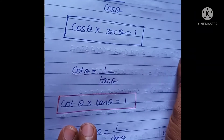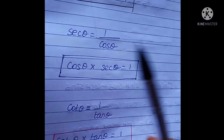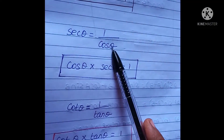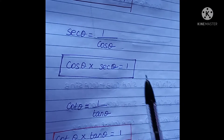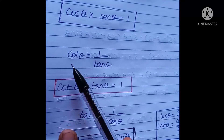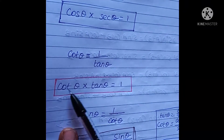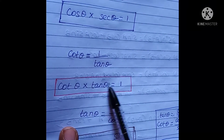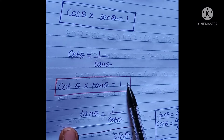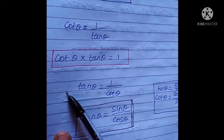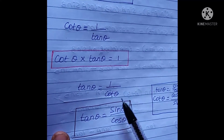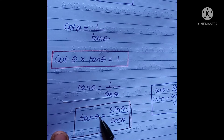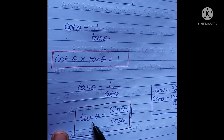Similarly, cosθ into secθ equal to 1. So cosθ is equal to 1 by secθ, and secθ is equal to 1 by cosθ.